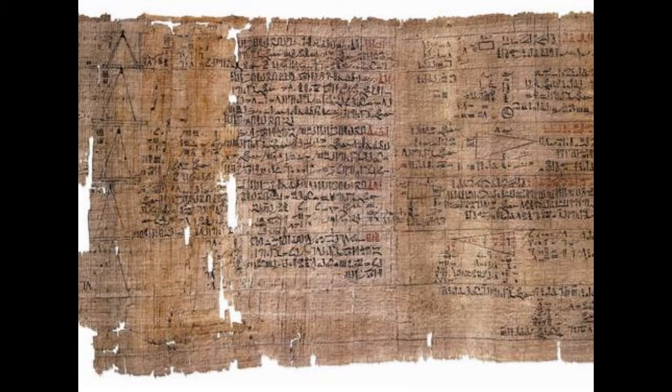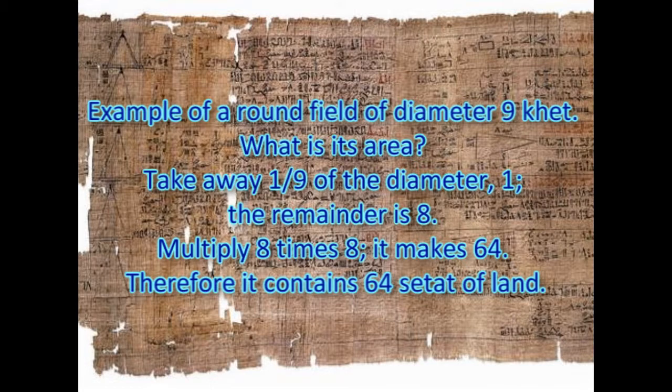They even had an application problem written in the famous Rhind papyrus. The Rhind papyrus, as shown, is a great example of evidence that shows that the Babylonians used applications of area. For example, let's take a look at this problem written in the Rhind papyrus. The question states: Example of a round field of diameter 9 ket, what is its area?